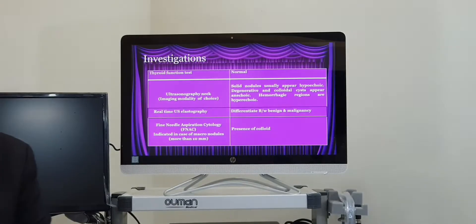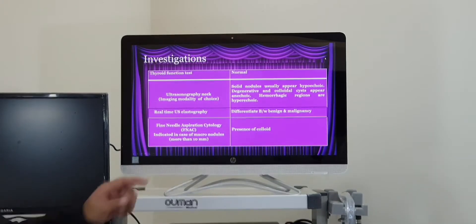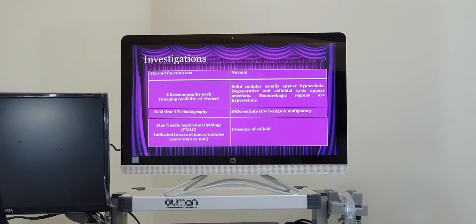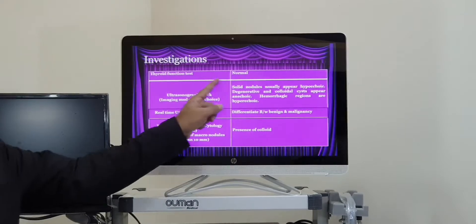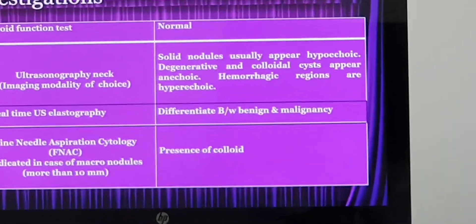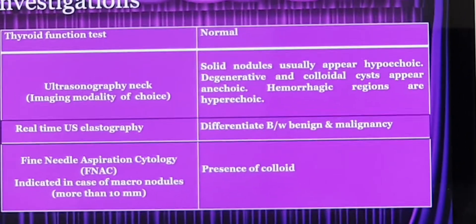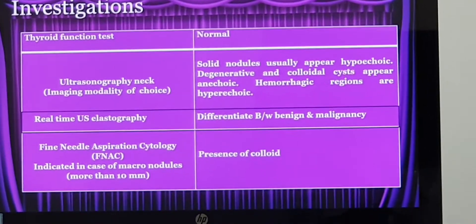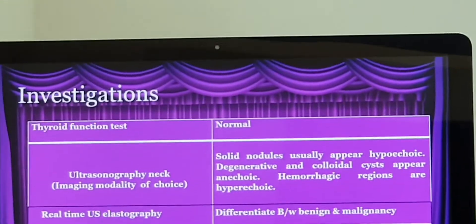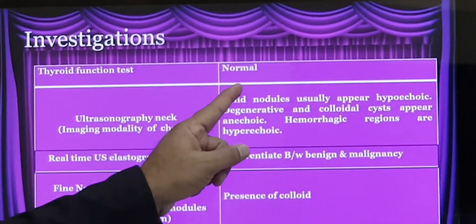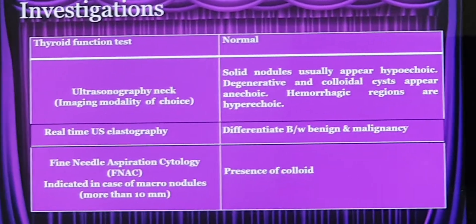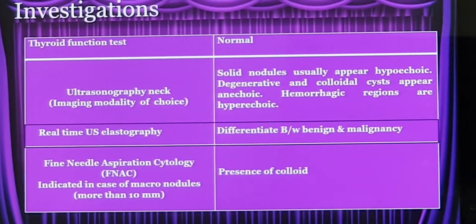The basic investigation to start with: I will do a thyroid function test. As the topic, I have already told you, this is multinodular goiter with non-toxic variety. Non-toxic means the thyroid function will be normal — TSH, T3, T4, all three hormones will be normal.